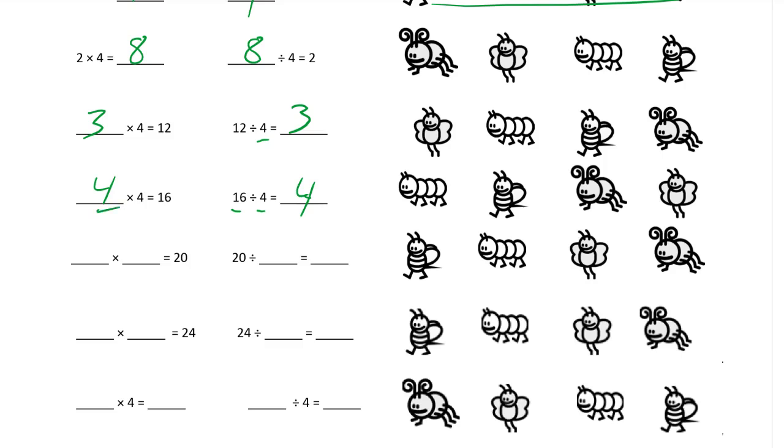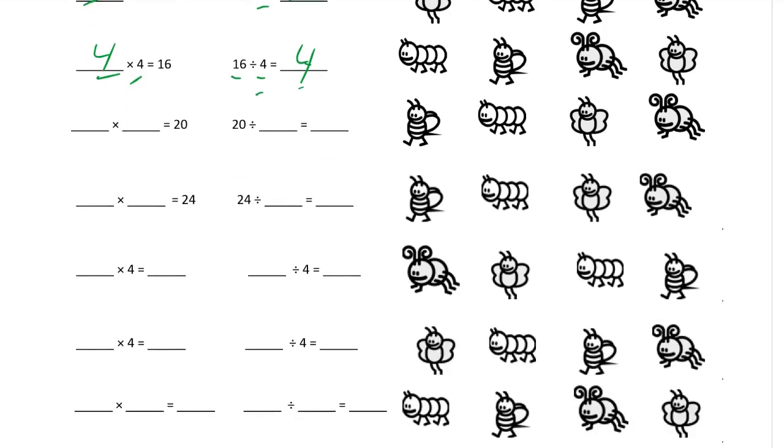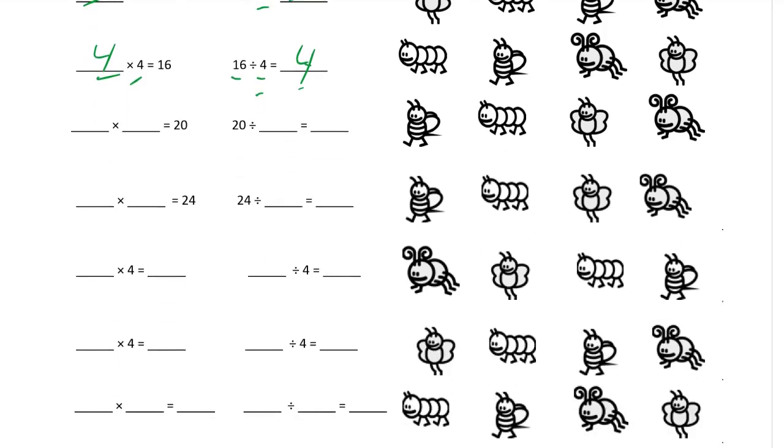You're going to have the two factors. They're going to be your divisor and your quotient. Not necessarily in the same order. But your product and your dividend are always going to be in the same place. Unless you write the equations backwards.